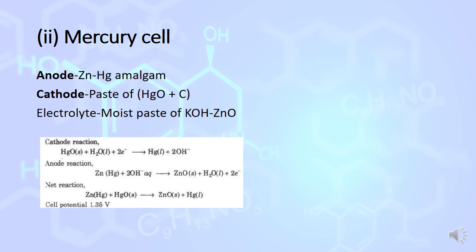At anode, zinc amalgam combines with electrolyte OH- ion to convert into ZnO and release electrons. These electrons reach the cathode where HgO combines with the electron to convert into Hg. During this process there is no ion involved. Overall reaction when written shows there is no ion involved, so there is no change in concentration. Therefore potential of the cell remains constant, not only during its operation but throughout its life. Cell potential remains constant at 1.35V.